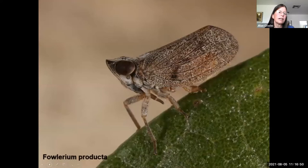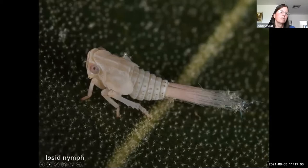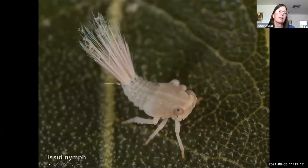Some planthopper nymphs that live up on trees also produce waxy filaments. Here's one that lives on oaks — the adult is here, but the nymph produces a little waxy filament that looks like a pink tail, which it erects and spreads if it feels threatened, so a predator would hopefully go after that little pink tail rather than the nymph.